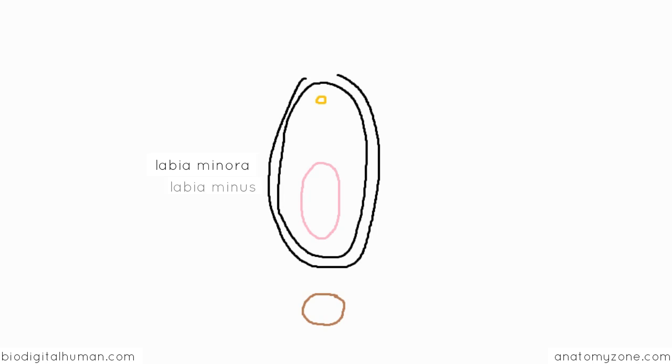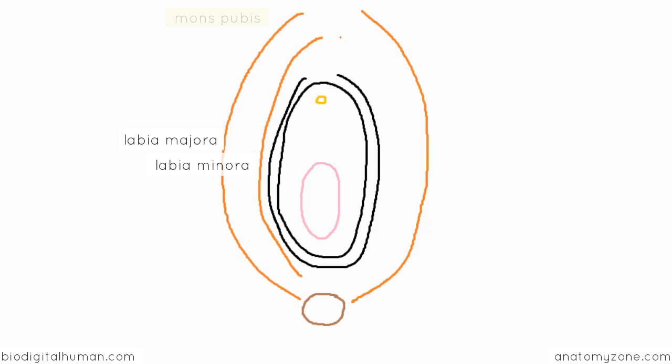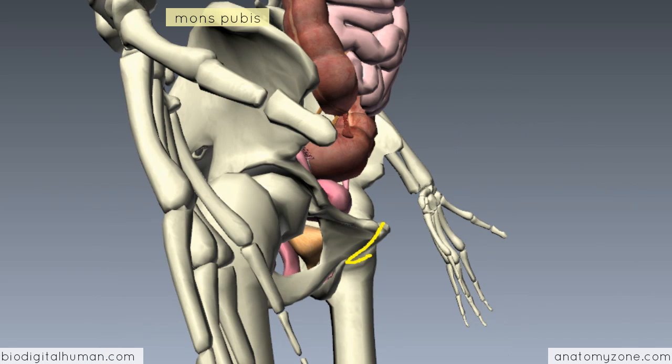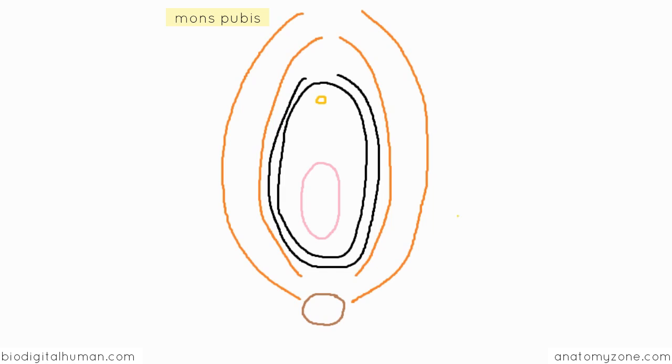So labia just means lips in Latin. Then you've got the outer lips, which are called the labia majora. The labia majora run from the mons pubis, which is a layer of adipose tissue which lies over the pubic symphysis, to the perineum posteriorly, where they're connected by the posterior commissure. You've got this depression posteriorly.